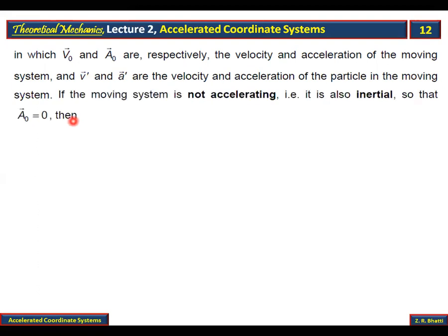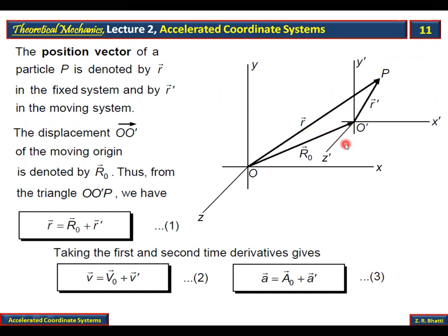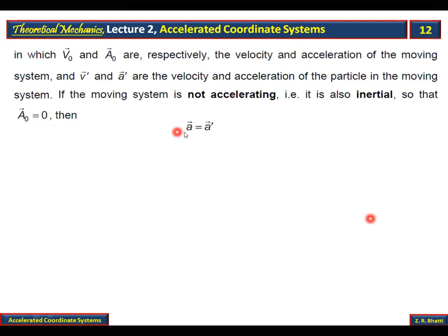In which V-naught and A-naught are respectively the velocity and acceleration of the moving system, and V-dash and A-dash are the velocity and acceleration of the particle in the moving system. If the moving system is not accelerating, it is also inertial. When it is not accelerating, the velocity is constant, A-naught is zero.